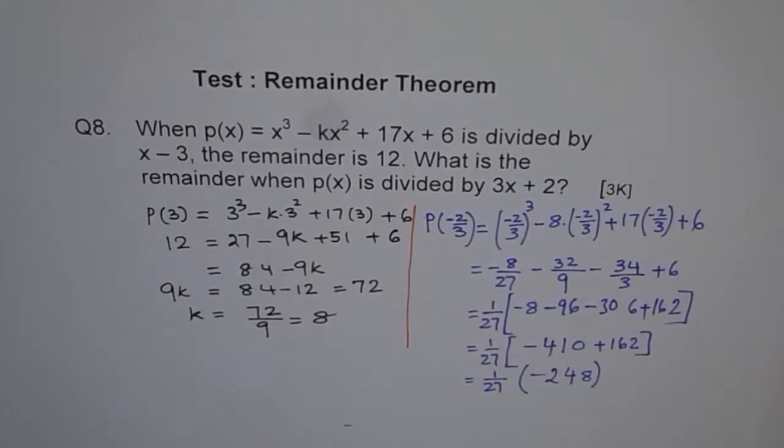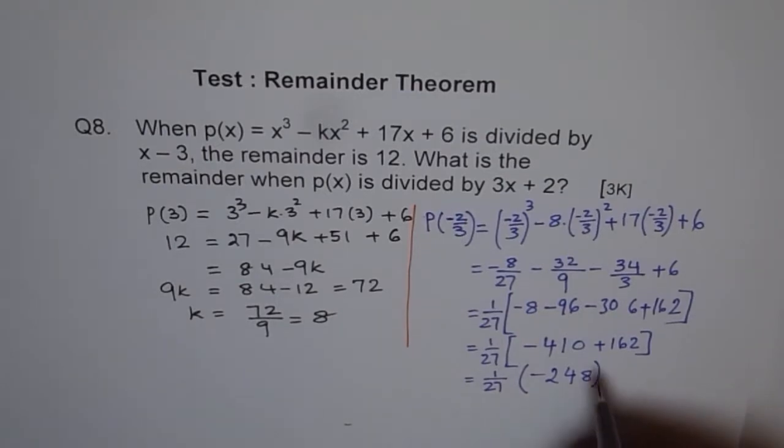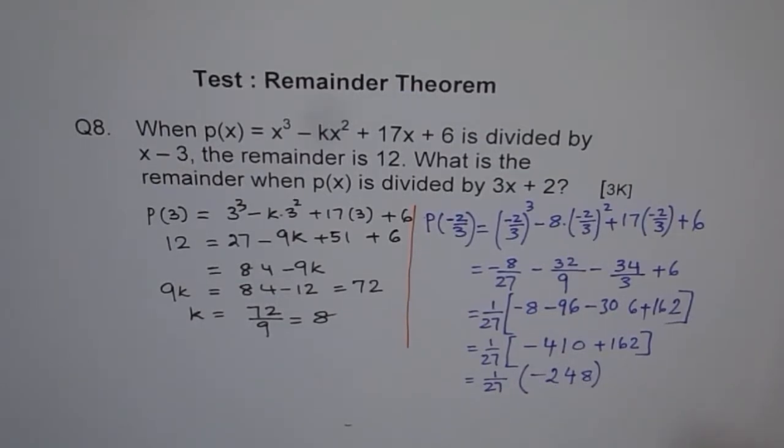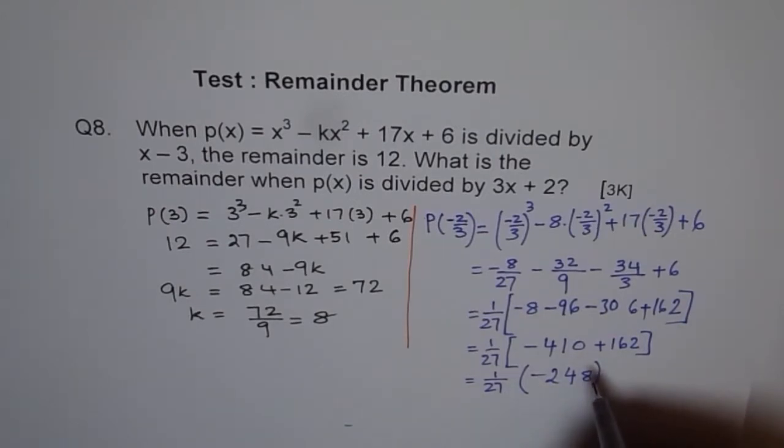That's kind of our answer for the time being. So you can say minus 248 over 27. That will be our answer for this.